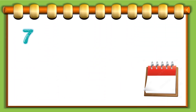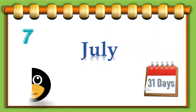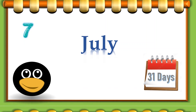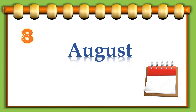Seven: July, thirty-one days. Eight: August, thirty-one days.